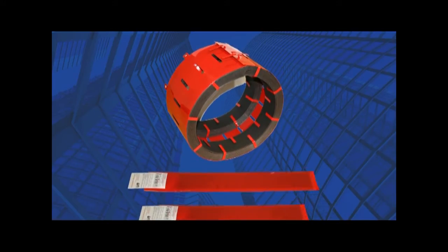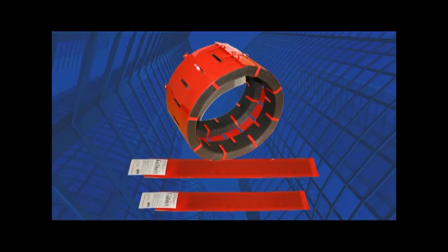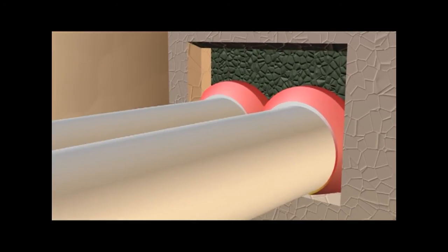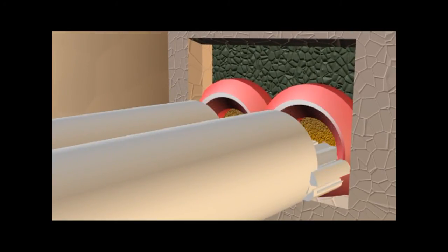Pipe collars and pipe wraps contain an intumescent compound which expands when exposed to fire. As the intumescent compound rapidly expands, the pressure crushes the pipe and seals the opening.